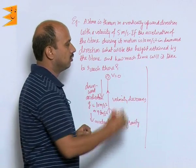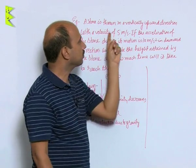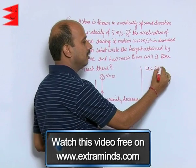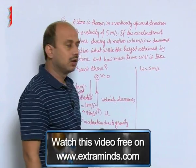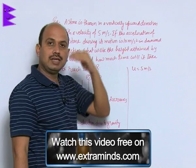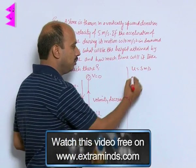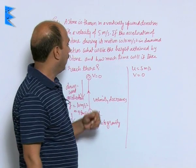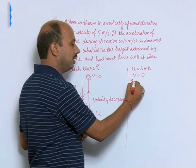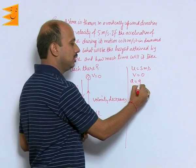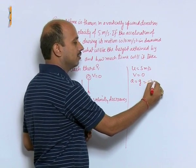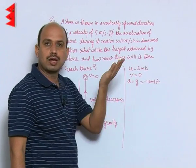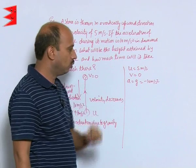So now see here solution of this question. What you are given: u is equal to 5 meter per second. Body is going up, reaching at maximum height, final velocity will be 0. So we can write v is equal to 0. And now I have to take acceleration a is equal to g is equal to minus 10 meter per second square because we are treating it as retardation. The body is going up, acceleration is acting downward.